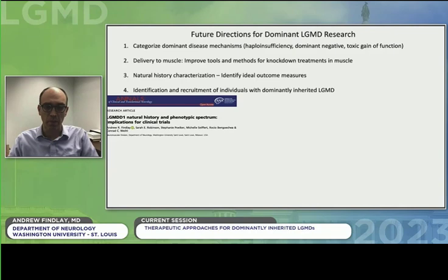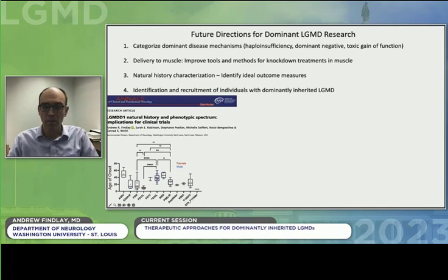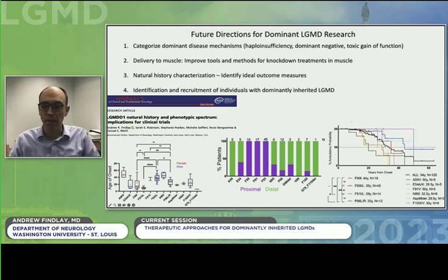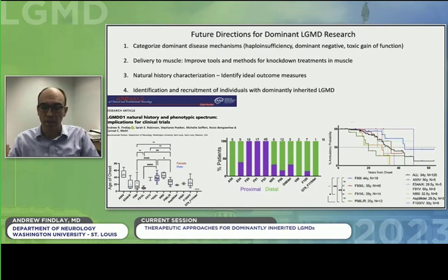We started to address this by conducting a preliminary natural history study in LGMD-D1. We found that different disease-causing mutations are associated with variable ages of onset, and various mutations are associated with different weakness patterns — where some individuals had distal predominant weakness affecting their hands and feet, whereas others had a more typical limb girdle pattern. We also found that certain mutations are associated with different rates of disease progression, where some individuals progress much more quickly to using a wheelchair, whereas others progress much more slowly. Overall, this variability in LGMD-D1 really highlights the importance of identifying as many individuals with dominantly inherited limb girdles as possible, as future clinical trials will require high rates of participation to combat both variability in disease severity and the rarity of these disorders.